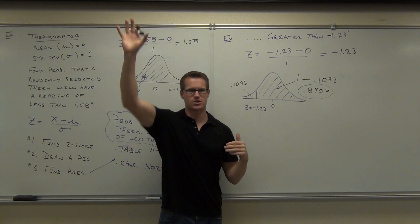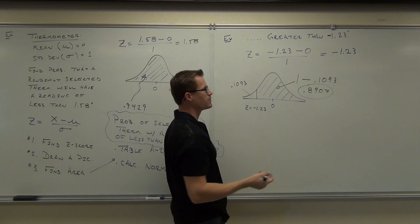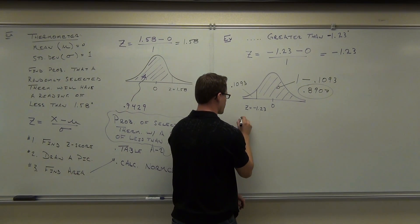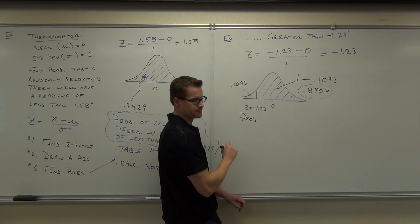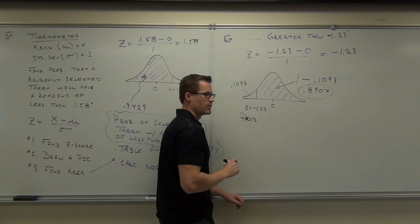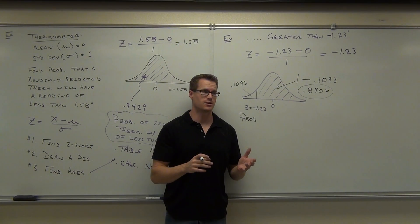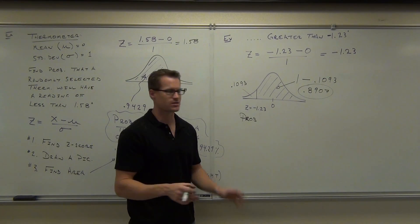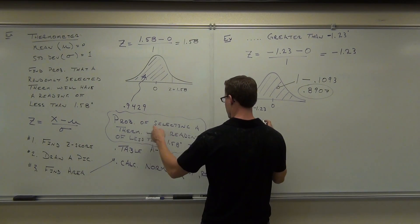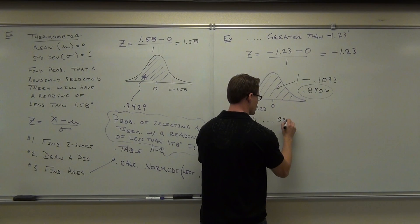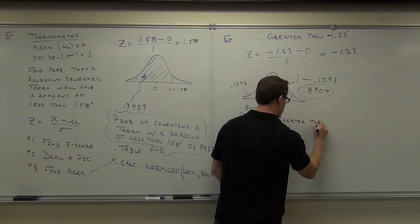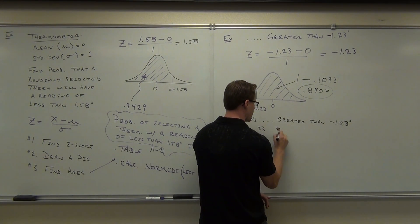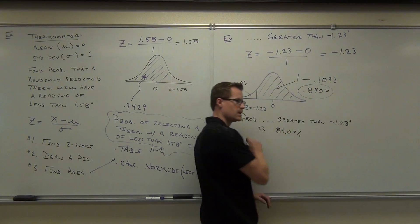Your table will never give you the area to the right. So the way you can answer this question is: there's an 89.07% chance that you are going to randomly select a thermometer and it will have a reading greater than negative 1.23. I would like you to answer in a complete sentence because in Chapter 7 and 8 you're going to be interpreting these things and you will have to write out sentences. So: the probability of selecting a thermometer with a reading greater than negative 1.23 degrees is 89.07%.